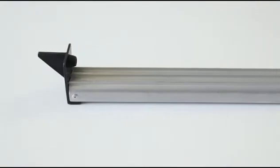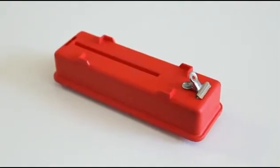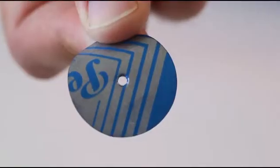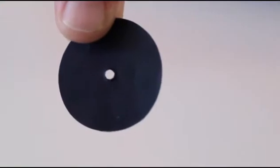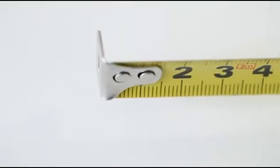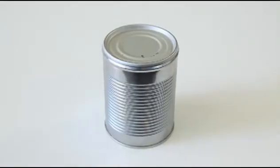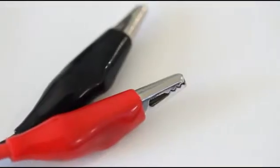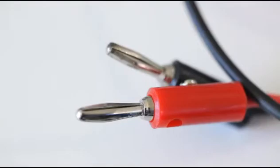For this experiment, you will need a rail track, a dynamics trolley, a ticker timer, ticker tape, a piece of round carbon paper, a tape measure, a suitable support such as a can, a 12 volt battery, and two leads with a crocodile clip at one end and a banana plug at the other.